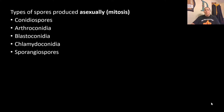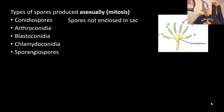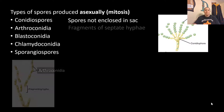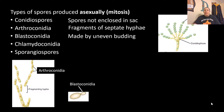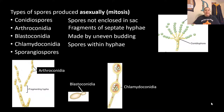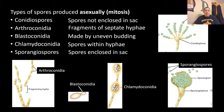Types of spores produced asexually through mitosis include: conidia spores, which are not enclosed in any sacs and are just linked together; arthroconidia, where fragments of septate hyphae break off and are released; blastioconidia, made by uneven budding where one cell is much larger than the other; chlamydoconidia, which have spores within the hyphae; and sporangiospores, which have spores enclosed in a specialized sac.